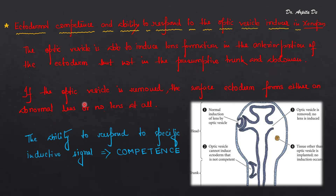If the optic vesicle is removed, the surface ectoderm forms either an abnormal lens or no lens at all. So the main influential body behind formation of the lens is the optic vesicle. If the optic vesicle is removed, there is an abnormal lens or there is no lens at all. Also, remember that most other tissues are not able to substitute for optic vesicles.